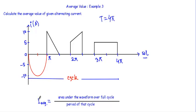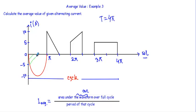Now I have to calculate the average value, therefore I will write: I_average equals area under the waveform over a full cycle divided by the period of that cycle. The period of this waveform will be 4π. The area under the alternating current over the full cycle — that means the area under this waveform over the full cycle — will be the green shaded region as I am indicating.